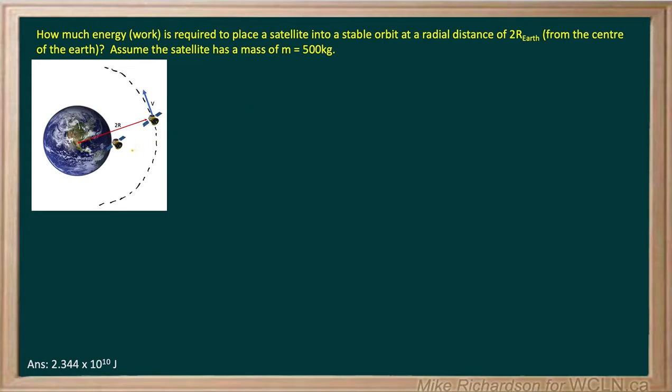We have a satellite on the surface of the Earth. We can assume it's initially stationary, and the goal is to get it into a stable orbit at a height of r above the surface of the Earth. In other words, the radius of the orbit would be two times the radius of the Earth.